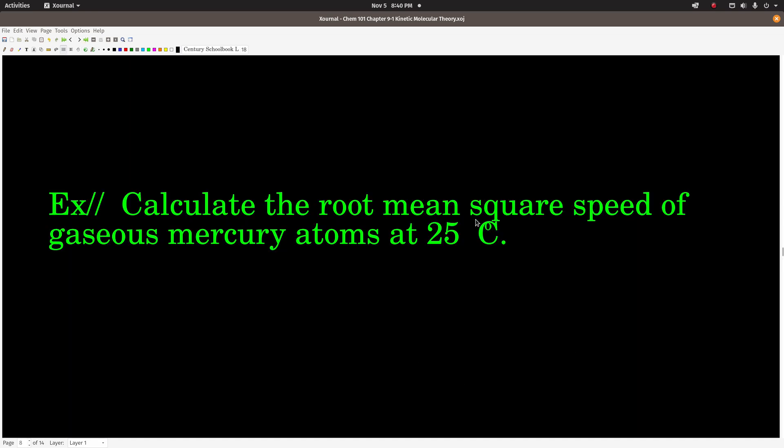All right, so here's a little example. We want to calculate the root mean square speed of gaseous mercury atoms at 25 degrees Celsius. So why don't you guys work this out on your own, come on back when you get an answer.